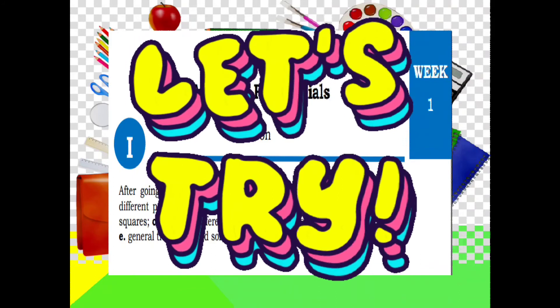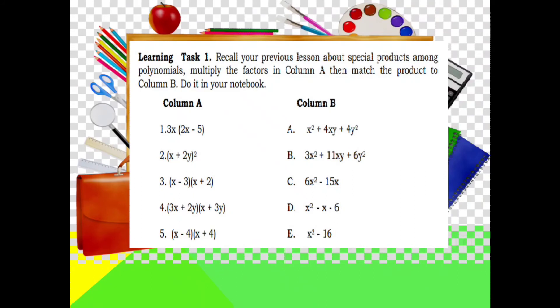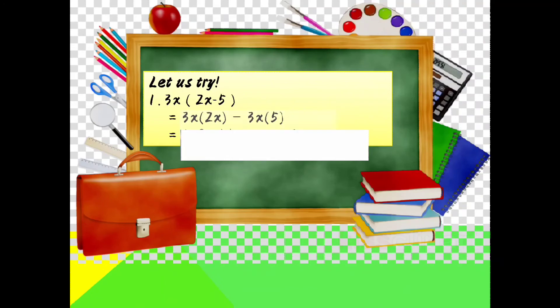Let us try learning task number 1. Recall your previous lessons about the special products among polynomials. Multiply factors in column A, then match the product of column B. Let us try. Example, 3x times 2x minus 5 is equal to, we can use FOIL method or distributive method. We will multiply 3x to 2x minus 5. 3x times 2x is equal to 6x squared. Then 3x times negative 5 is equal to negative 15x. So the answer is 6x squared minus 15x.